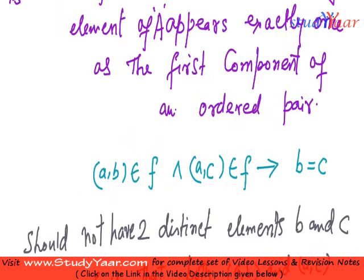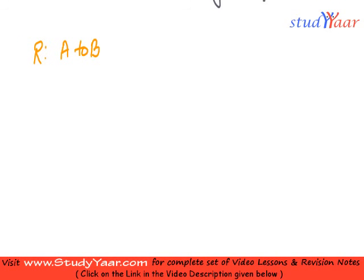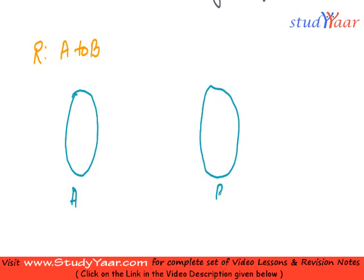Let us understand a few concepts about relations that would help us realize the concept of functions better. Suppose I have a relation from A to B — here is my set A and here I have my set B. I have a few elements in my set A and a few elements in my set B as well. A relation of the type where each element of A is related to exactly one element in B.